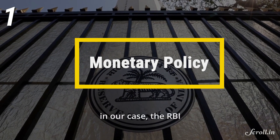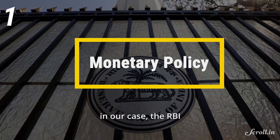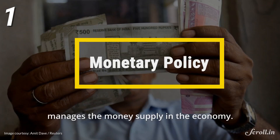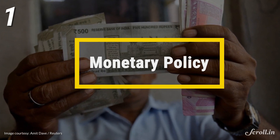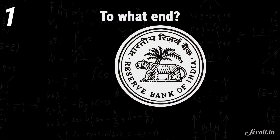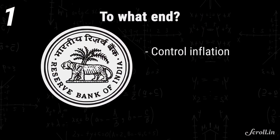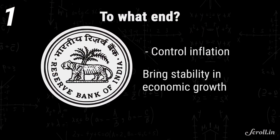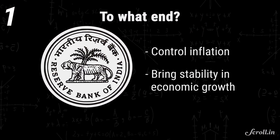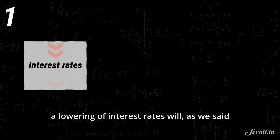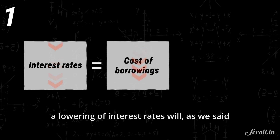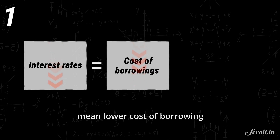Monetary policy essentially is the mechanism through which the central bank — in our case, the RBI — manages the money supply in the economy. Its chief ends are to control inflation and bring stability in economic growth.